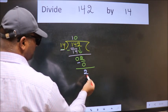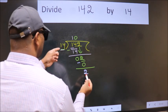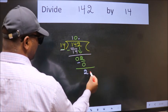Over here we did not bring any number down. And 2 is smaller than 14. So now we can put dot and take 0.